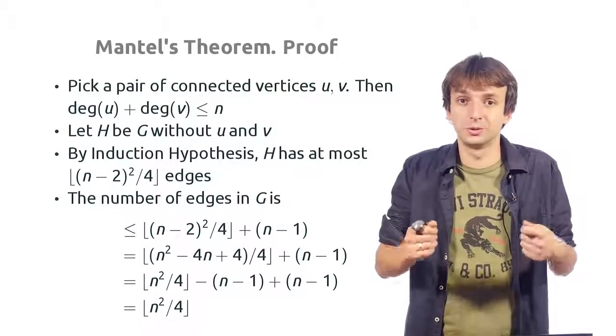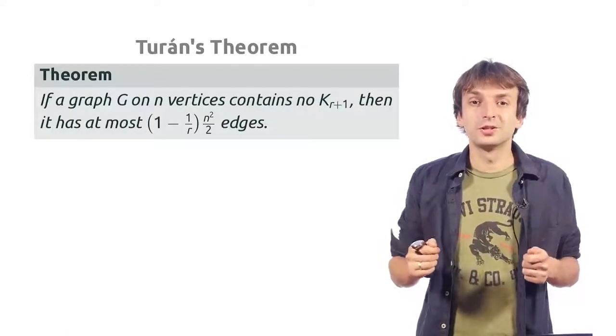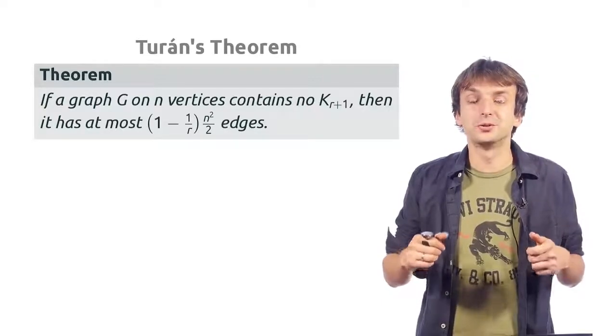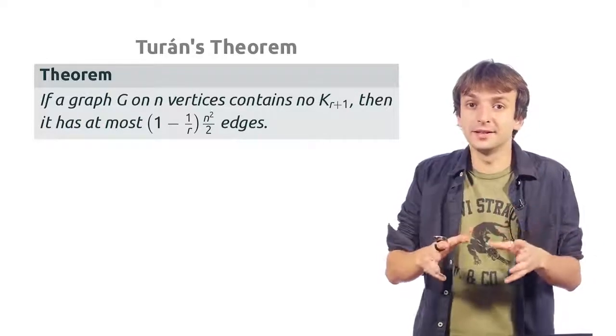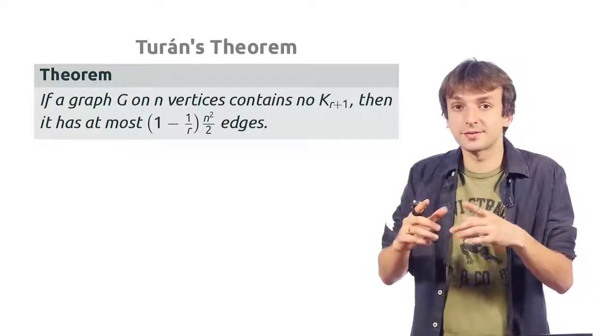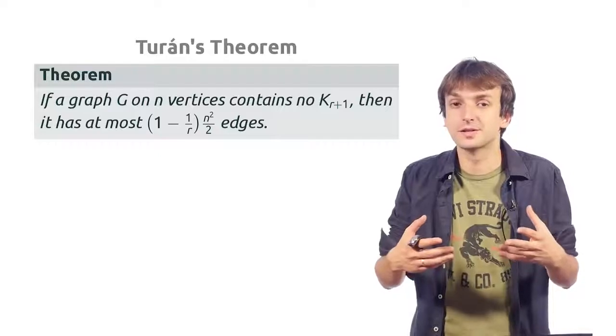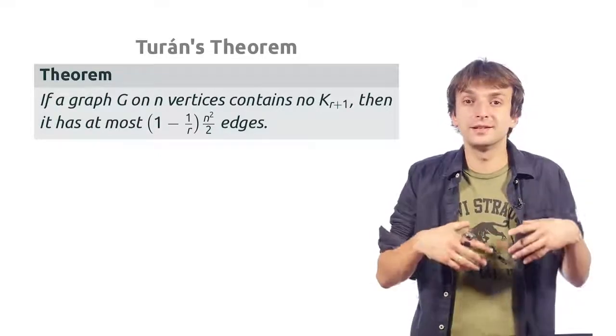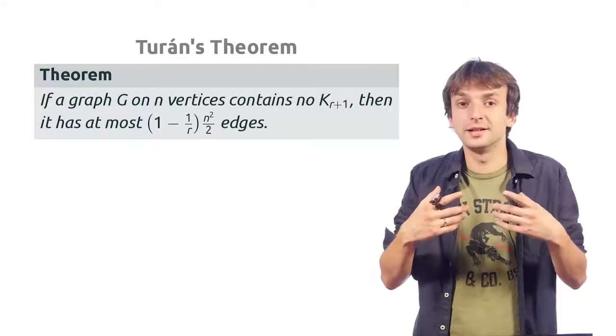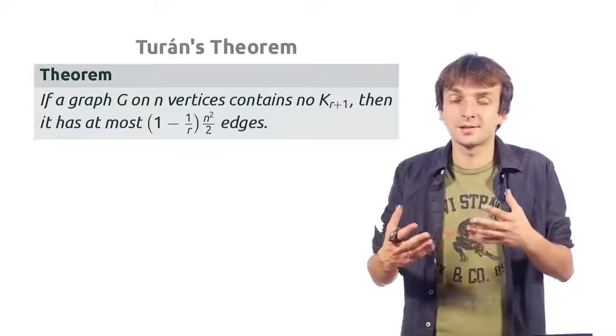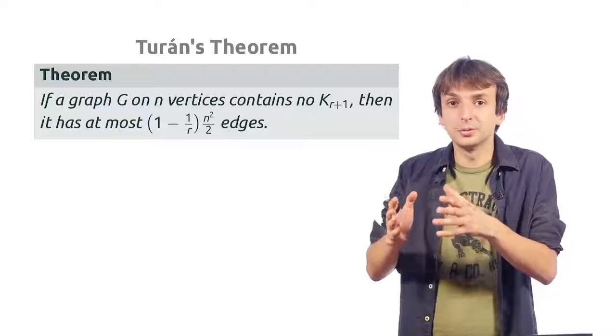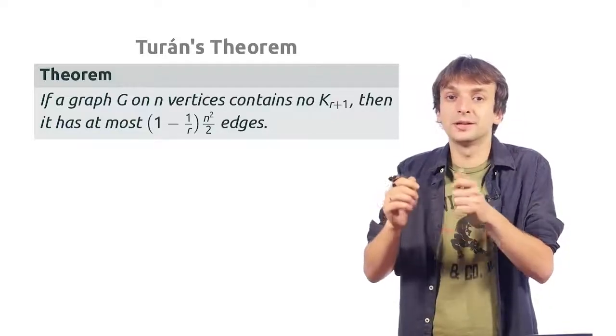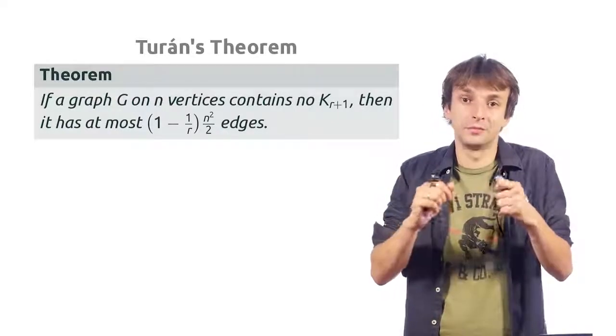There is a generalization of Mantel's theorem which is called Turán's theorem. Mantel's theorem says that if a graph doesn't contain cliques of size 3, then there are few edges. Turán's theorem says that if a graph doesn't contain cliques of size r plus 1, then there are somewhat few edges. For example, if you take r to be 2 in Turán's theorem, you will get exactly the statement of Mantel's theorem.